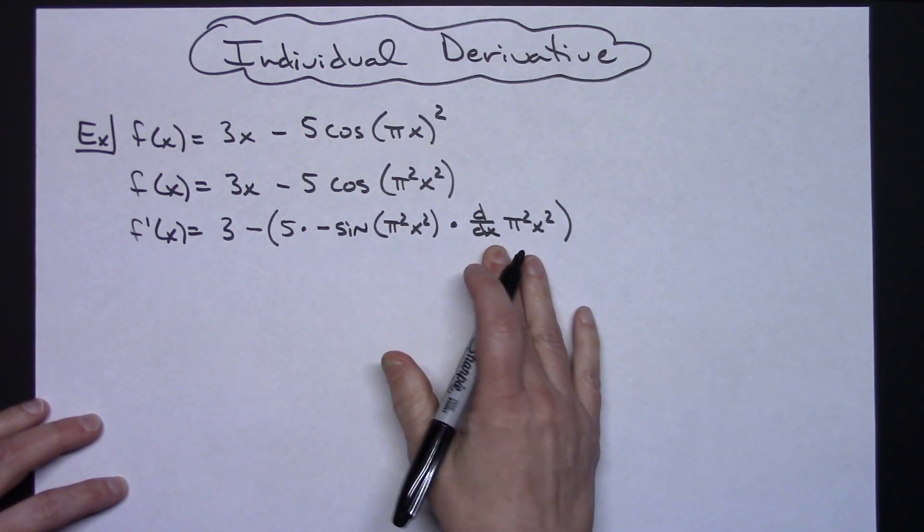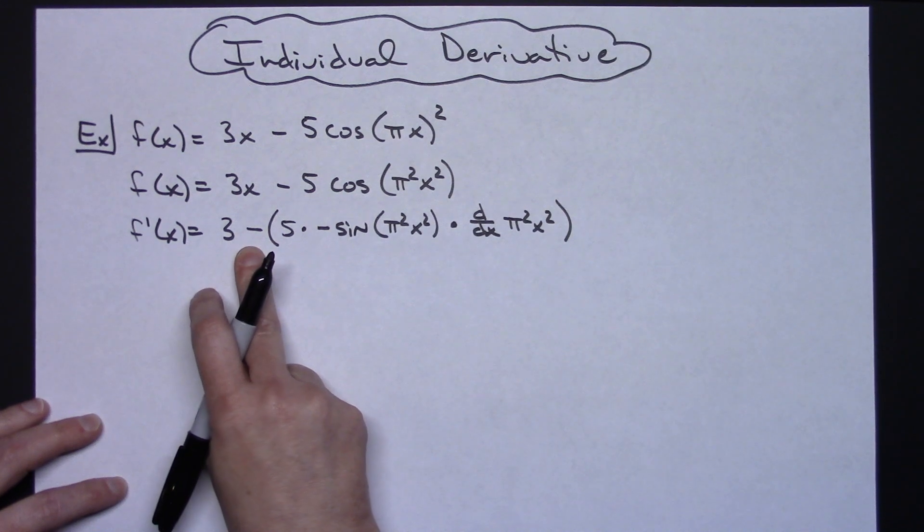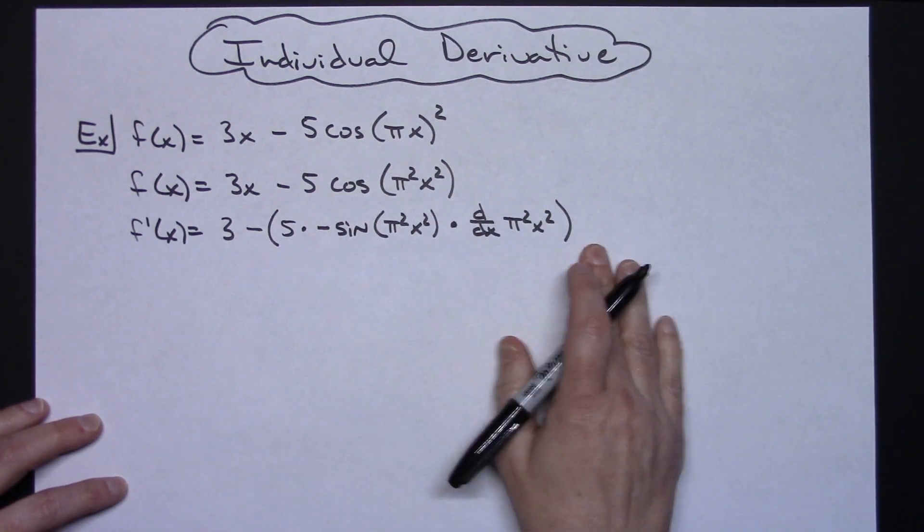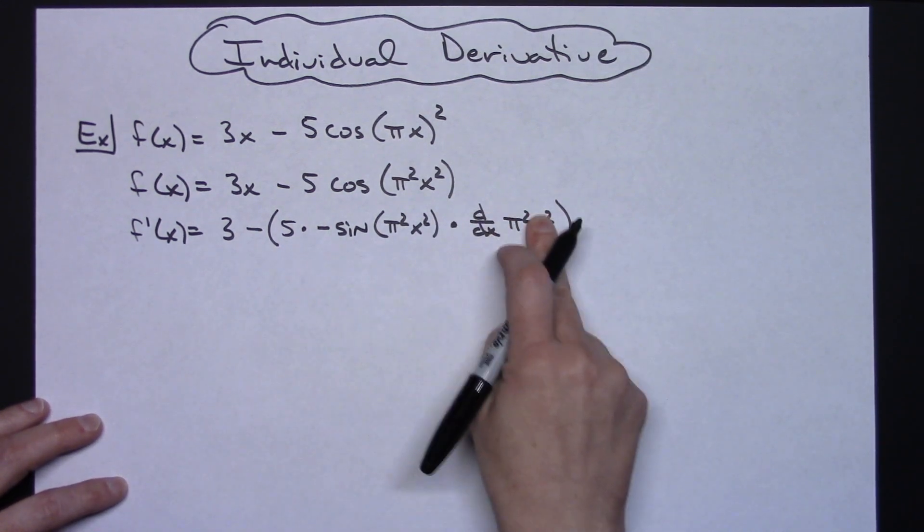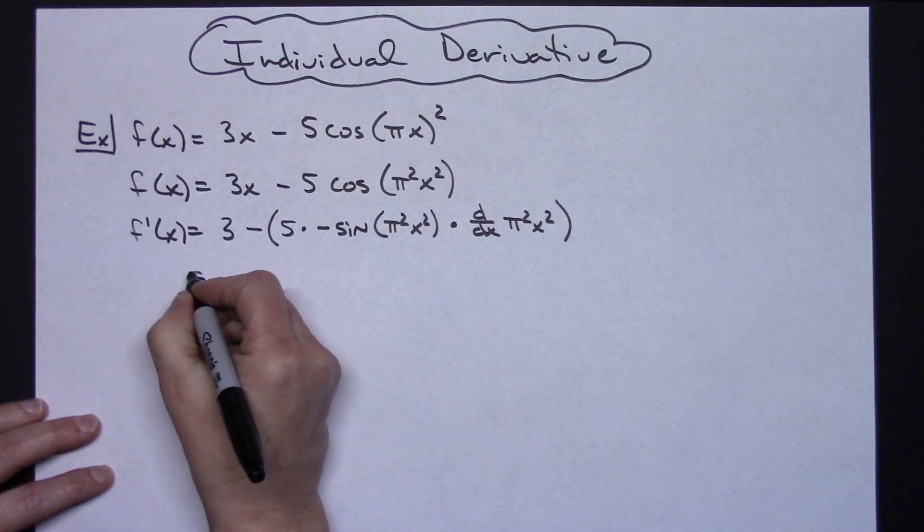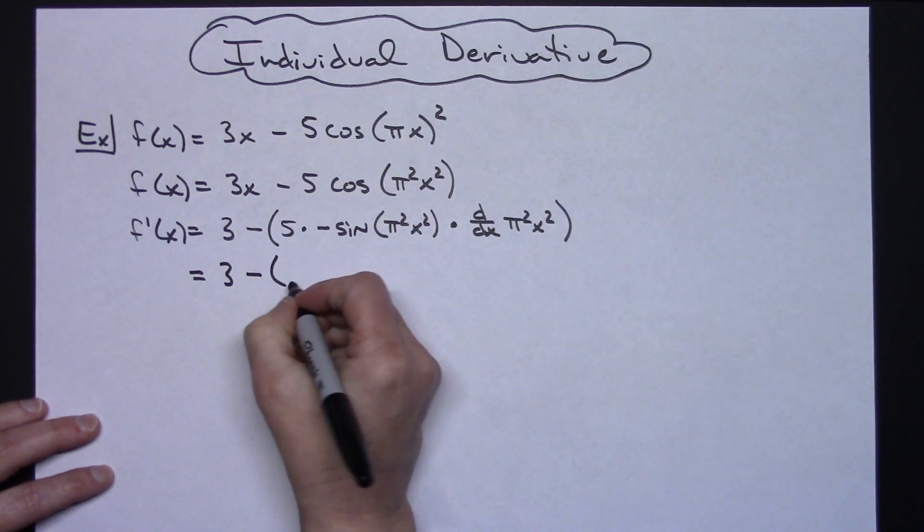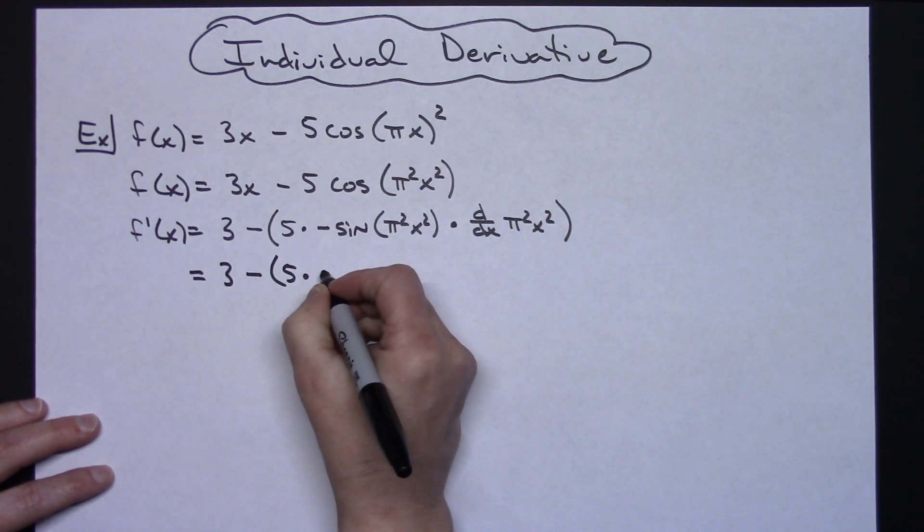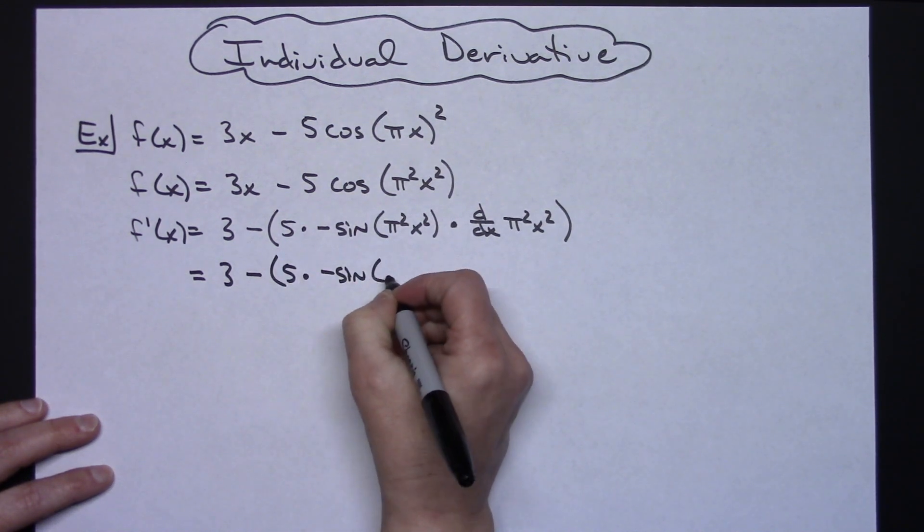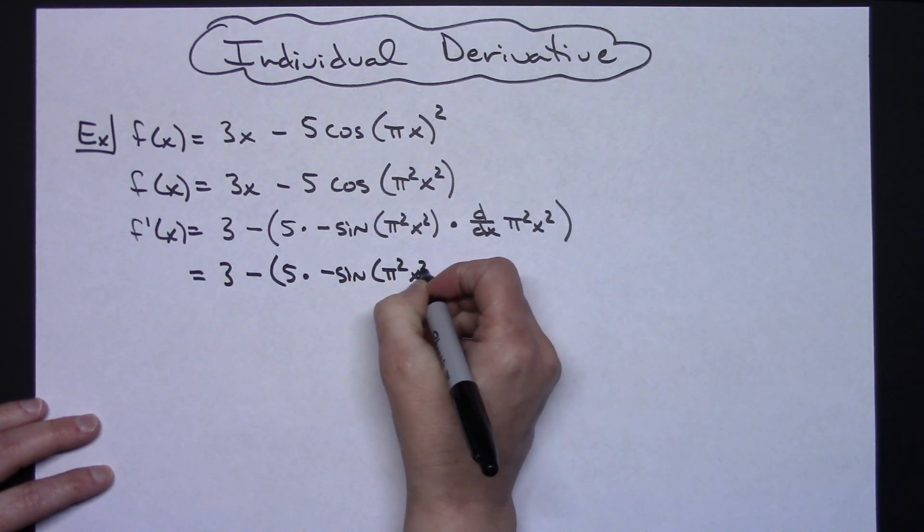I did not have a plus or minus in there of which case that minus would have made a big difference there. Okay now I still have one derivative left here so continuing to work here everything up to that point will be the same. So I'll have a 5 times that negative sine pi squared x squared.